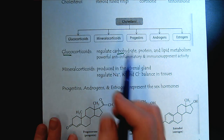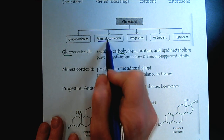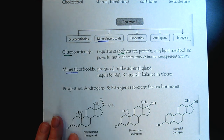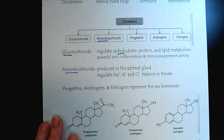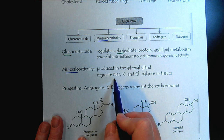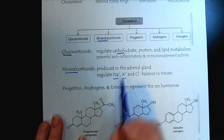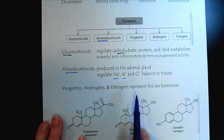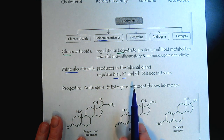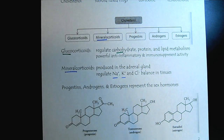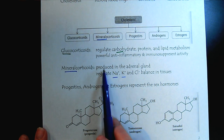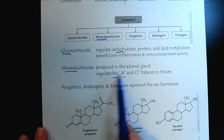Then we have the mineralocorticoids. As their name would imply — minerals, metals like sodium and potassium and other trace metals — they help to regulate their balance in the tissues.